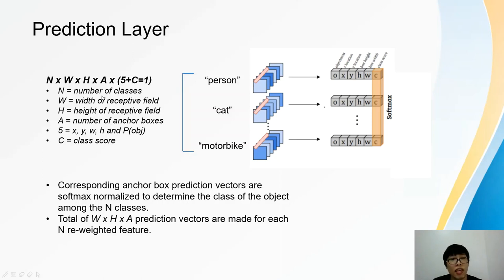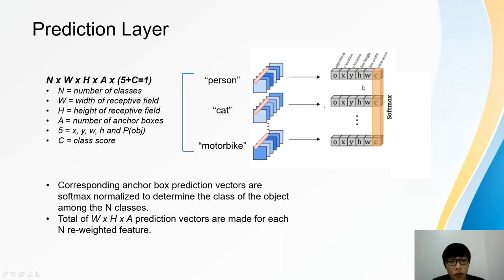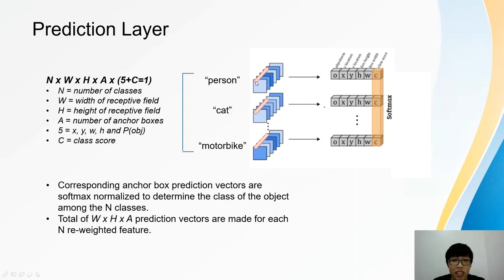Since the number of classes for detection is represented by n, therefore the value of c will be equal to 1. In other words, there is only one class score predicted in each prediction vector. For example, the n-th prediction vector represents the first anchor box prediction value at the first grid cell amongst all n reweighted features. The softmax normalization is applied to the class score among those n vectors. If the class score from the person class features is the highest, then the object in the first anchor box and the first grid cell will be classified as the person class.